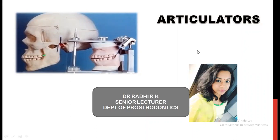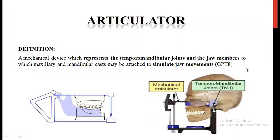Today's topic will be regarding the articulators. Coming to the definition of an articulator, it is a mechanical device which represents the temporomandibular joints and the jaw members, to which the maxillary and mandibular casts may be attached to simulate the jaw movements.